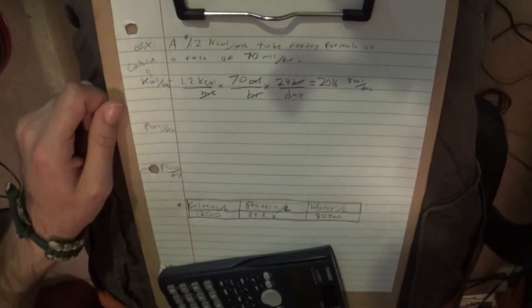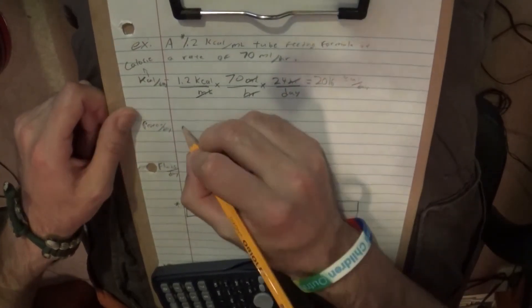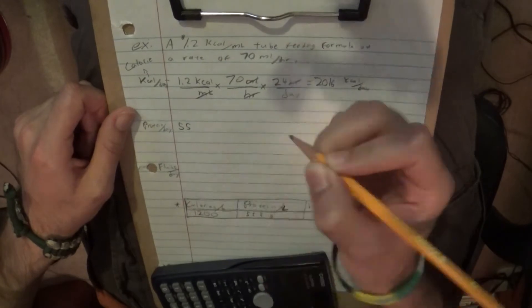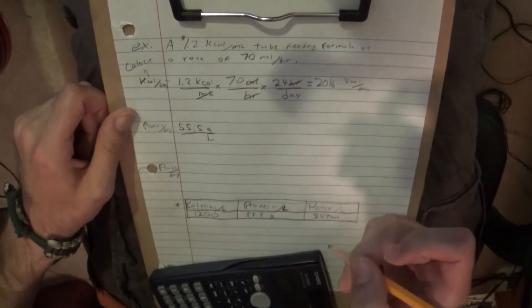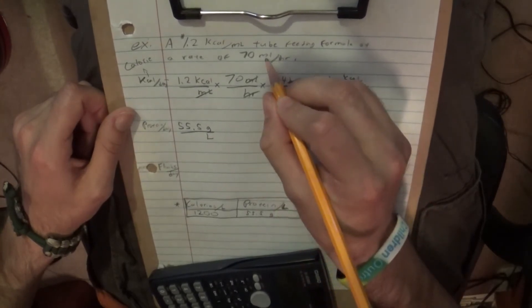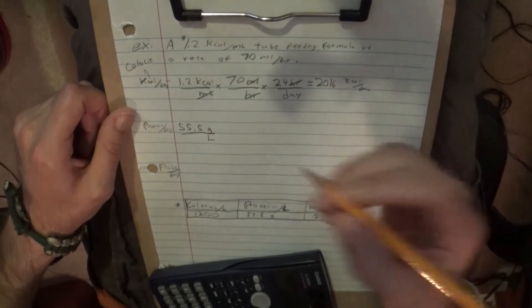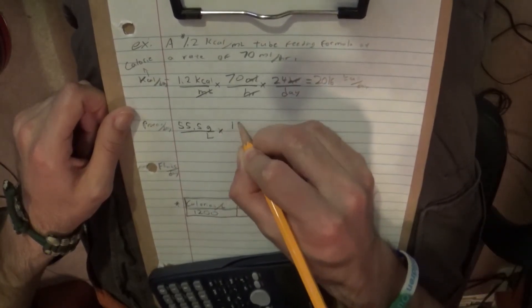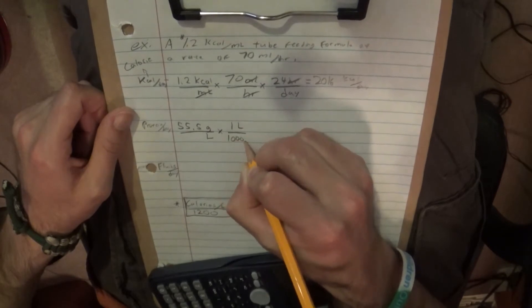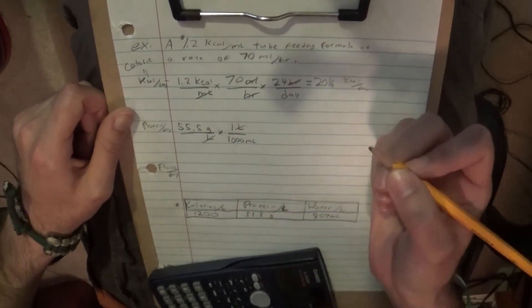So let's find out how much protein per day this will give us. Well, we know that protein is 55 grams per liter, actually 55.5 grams per liter of solution. Well, of course, you can't just have liters when milliliters are involved. So, we need to balance it out by saying one liter is 1,000 milliliters. That gets rid of the liters. So now we have grams over milliliters.